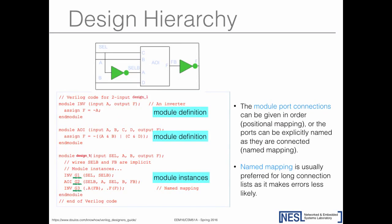Sometimes you define wires explicitly, as we did with wire AB and wire CD. Sometimes Verilog lets you define a wire implicitly if it's only one bit. If the width is only one bit, you don't have to explicitly declare it—when you create a module instance referencing that wire, Verilog will implicitly know that wire is connected. But this only works for one-bit wires.